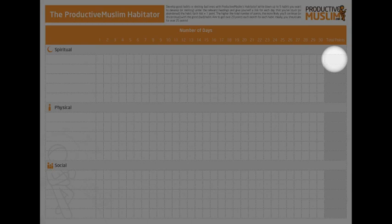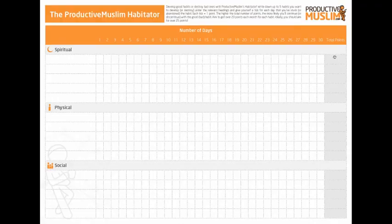Sometimes habits do relapse. Sometimes bad habits do come back to you. So it's good to keep this going for at least two to three months, making sure that the bad habit has been completely destroyed. Aim to get above 25 points in each of these habits and you'll be in great shape to develop a good habit or destroy a bad habit.